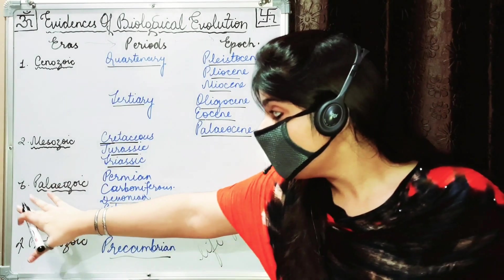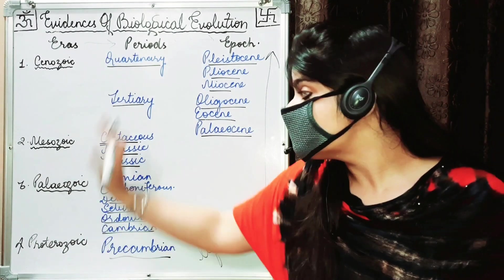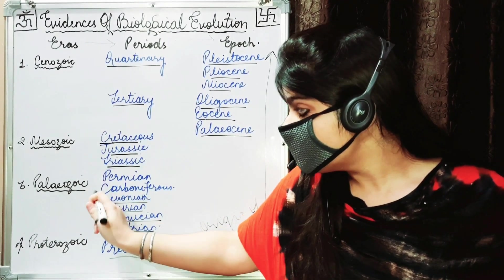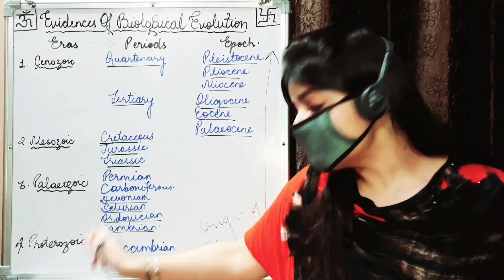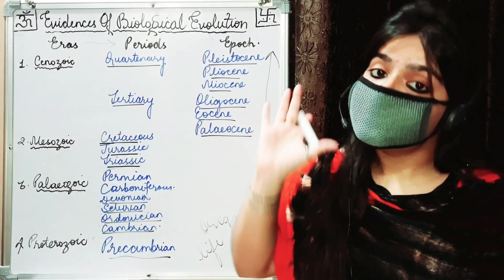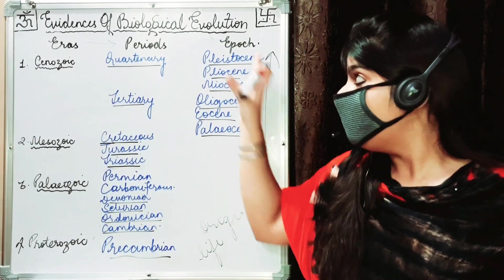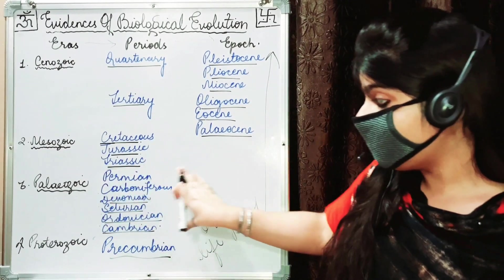When we talk about Paleozoic, this is divided into one, two, three, four, five, and six, total six periods. The periods are not divided into epochs further.